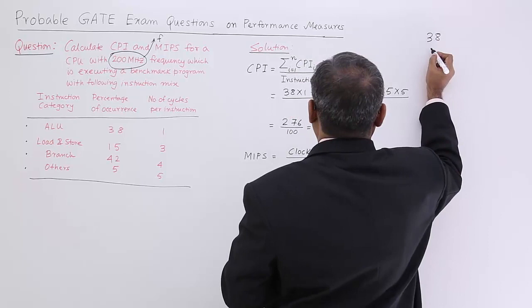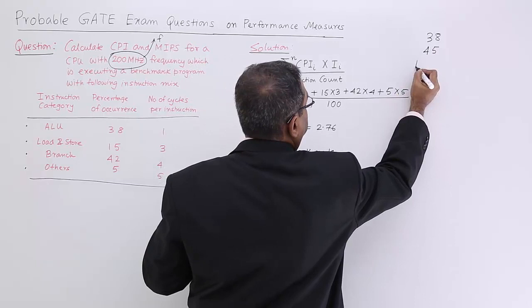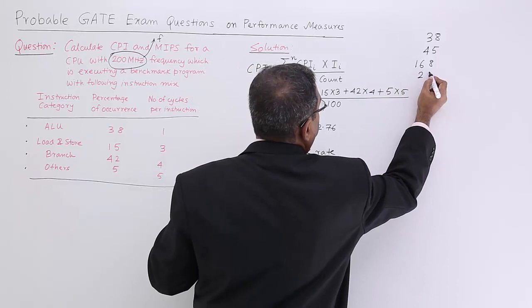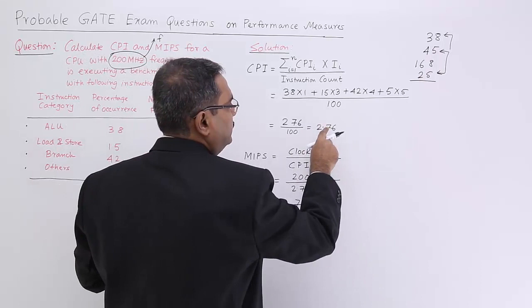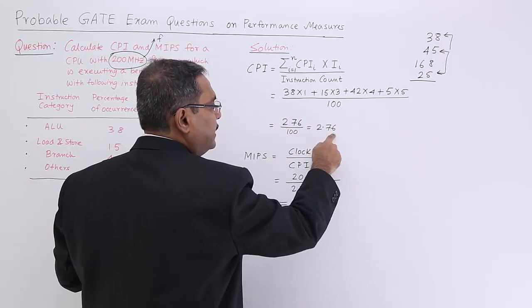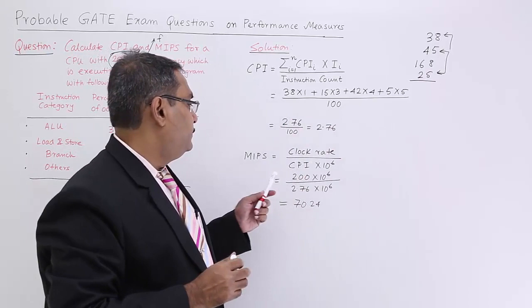So, 38 into 1, 15 into 3, 42 into 4, and then we are having 25. If we add them it is 70, if we add them it is 108. 108 plus 168 is nothing but 276. 276 by 100, that is 2.76. This is a very simple calculation I have done.